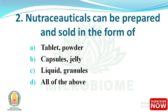Next question: nutraceuticals can be prepared and sold in the form of — options: tablet, powder, capsules, jelly, liquid, granules, or all of the above. The right answer is option D, all of the above — that is tablet, powder, capsules, jelly, liquid, and granules.